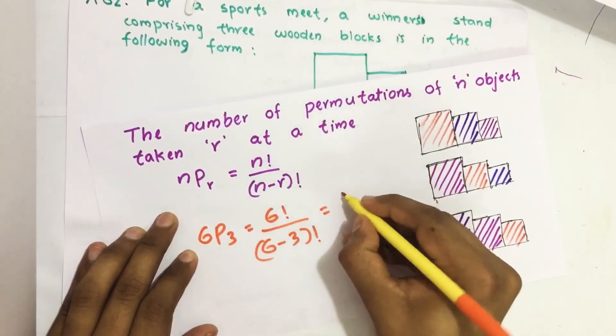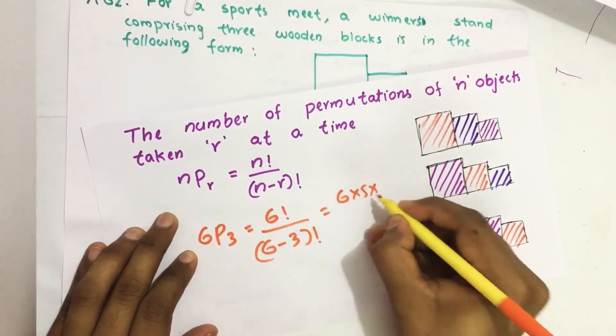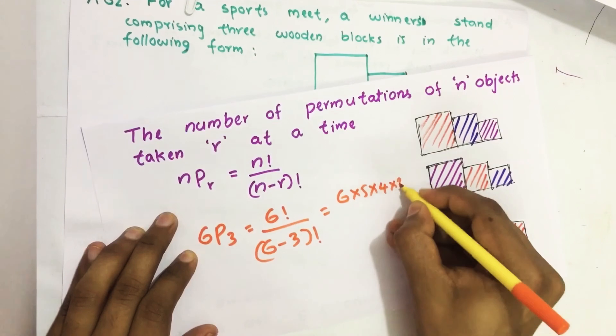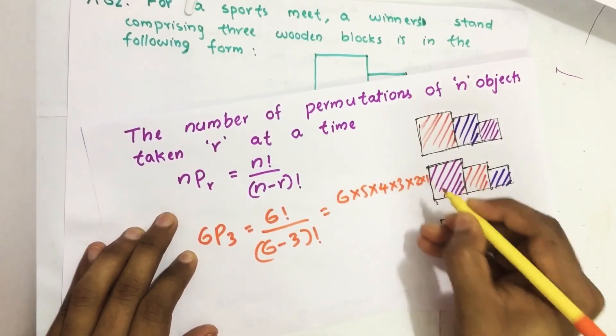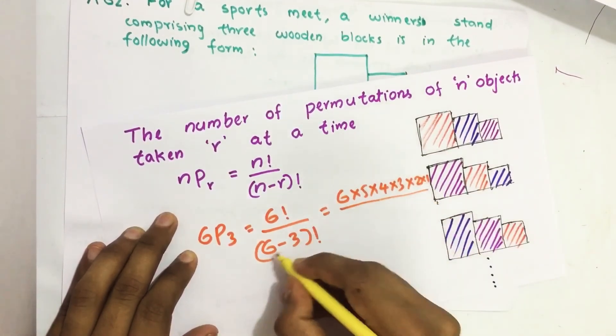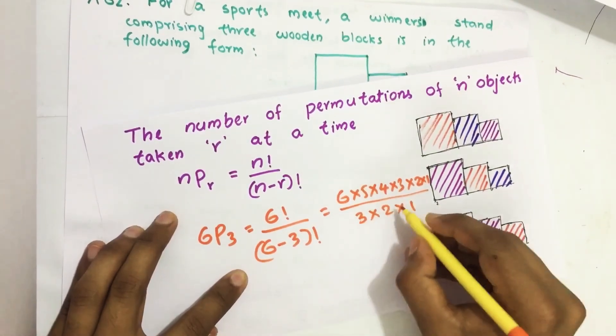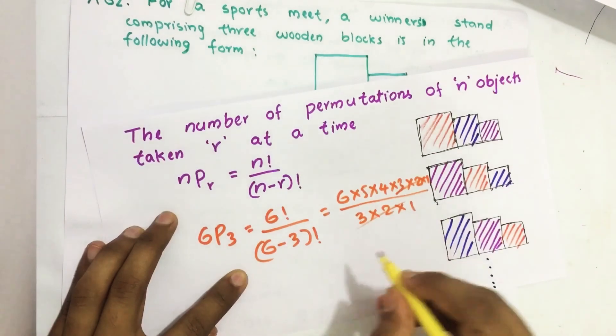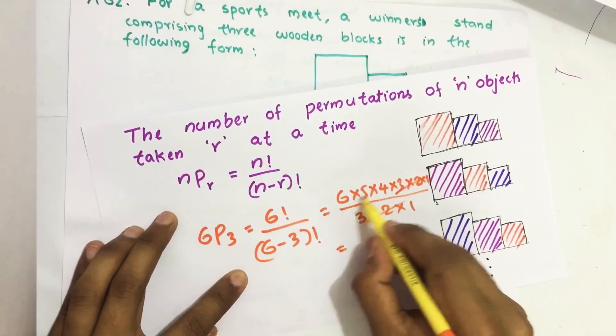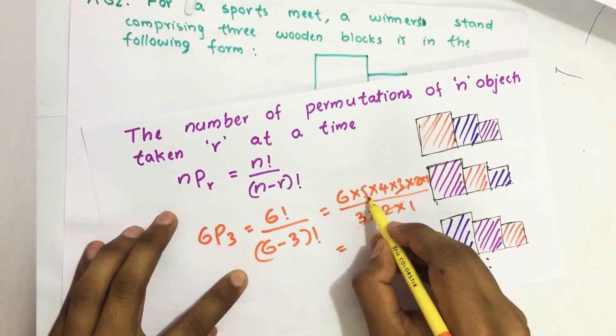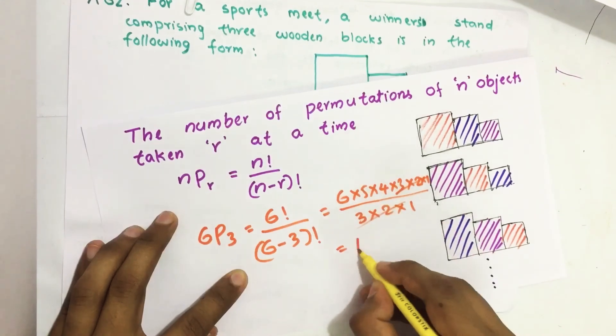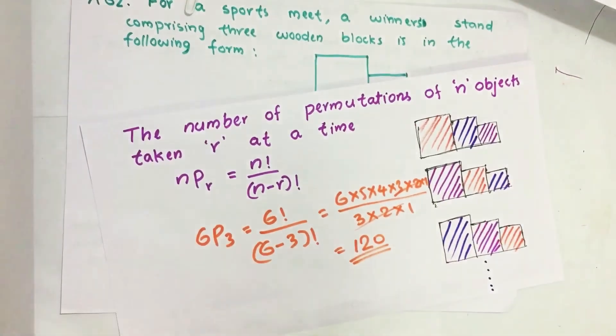We know 6 factorial equals 6 × 5 × 4 × 3 × 2 × 1 divided by 6 minus 3 factorial means 3 factorial, 3 × 2 × 1. So this and this gone. Then 6 times 5 is 30. 30 times 4 is 120. We get 120.